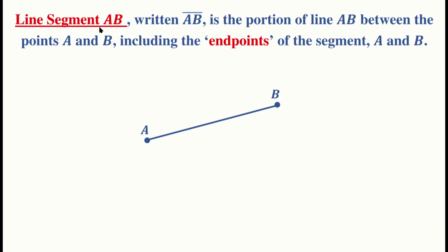When we say line segment AB, that's a part of line AB — specifically the part between points A and B, and it also includes those two points. In the context of a line segment, we call those two points the endpoints. For the notation of line segments, we use a bar above the letters AB. So when you see this notation, the correct way of reading it is 'line segment AB.'